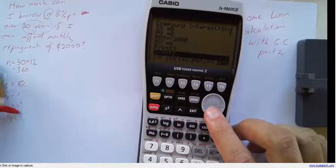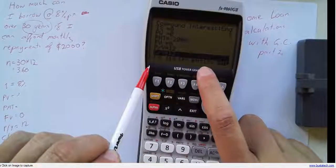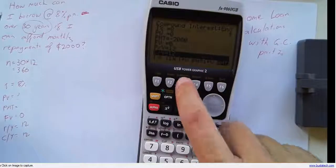The future value, we're going to pay it all off by the end. So the future value of our loan is 0. And the payments are happening monthly. So PY and CY will both be 12.